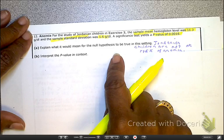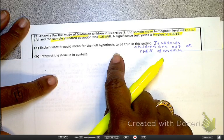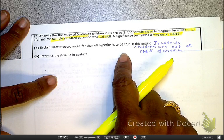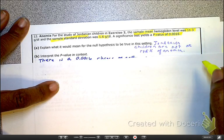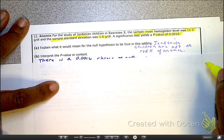Well, first of all, what does it mean for the null hypothesis in this setting to be true? Well, if it's true, that means that your Jordanian children are not at risk and they're okay. Because remember, your null hypothesis is saying that everything is okay. It is not a problem.